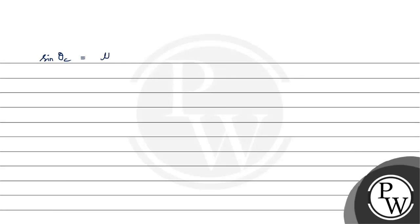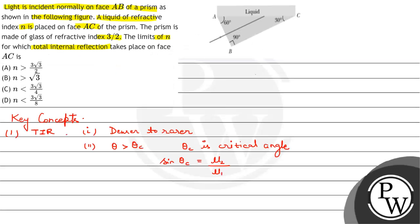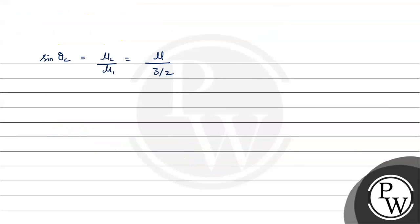We have mu 2 over mu 1. This is mu over 3 by 2 because the refractive index of glass is given to us as 3 by 2, which gives us 2 mu over 3.